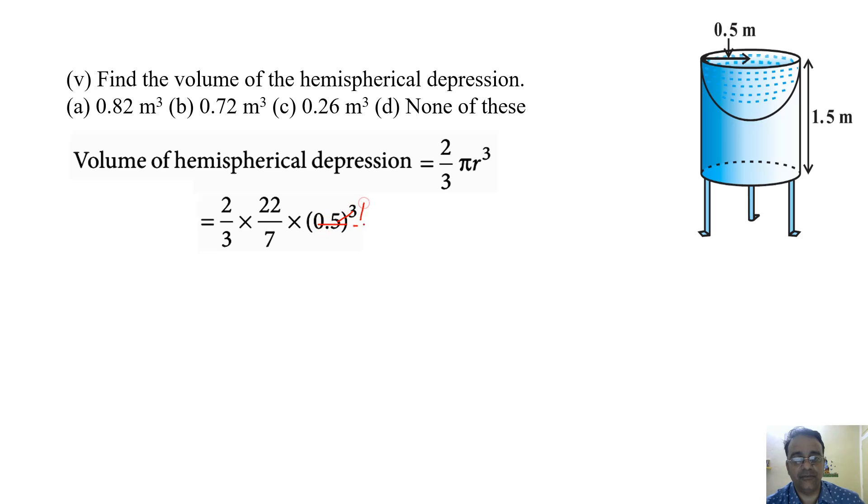Here we can do this: in this place, 1/2, 1/2, 1/2. And 2 we can cancel with this 2, and 2 we can cancel with this 11. So what we are going to get? 11 upon 42, so that is approximately 0.26 meter cube. So the correct option is C.